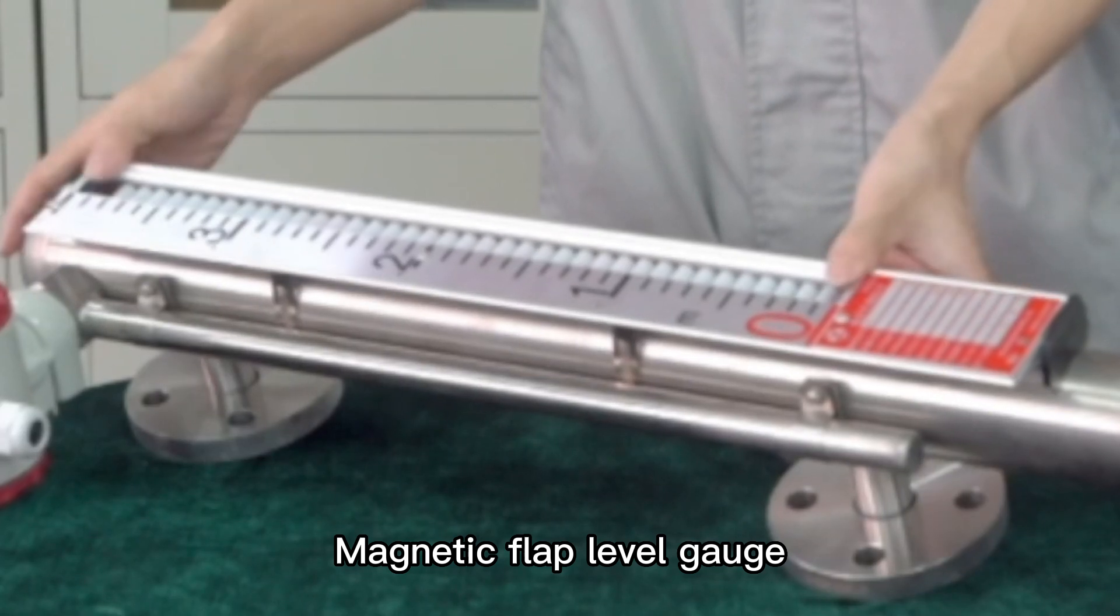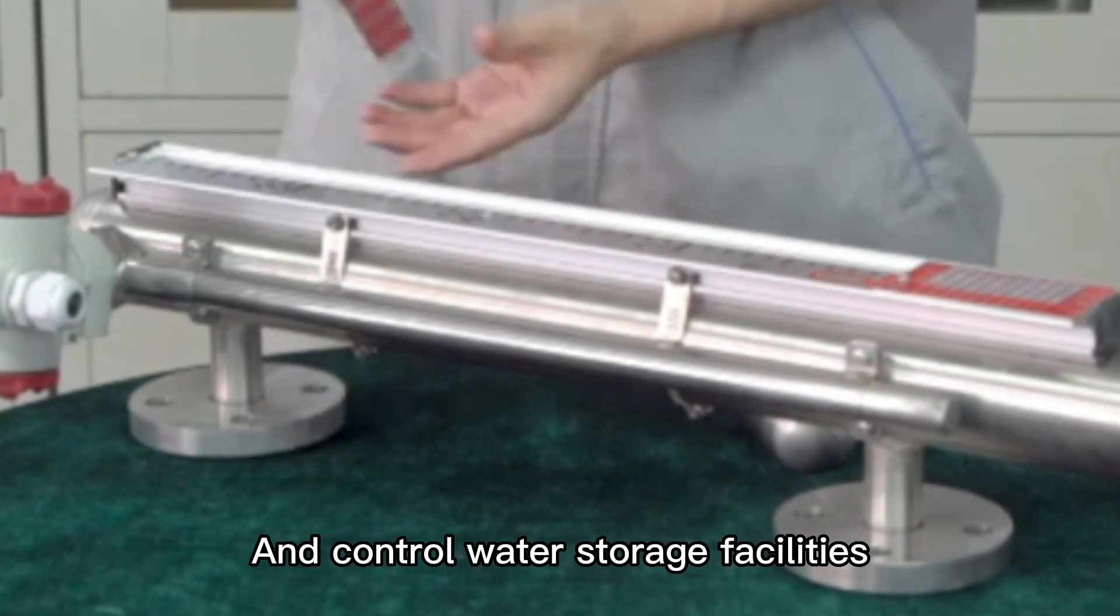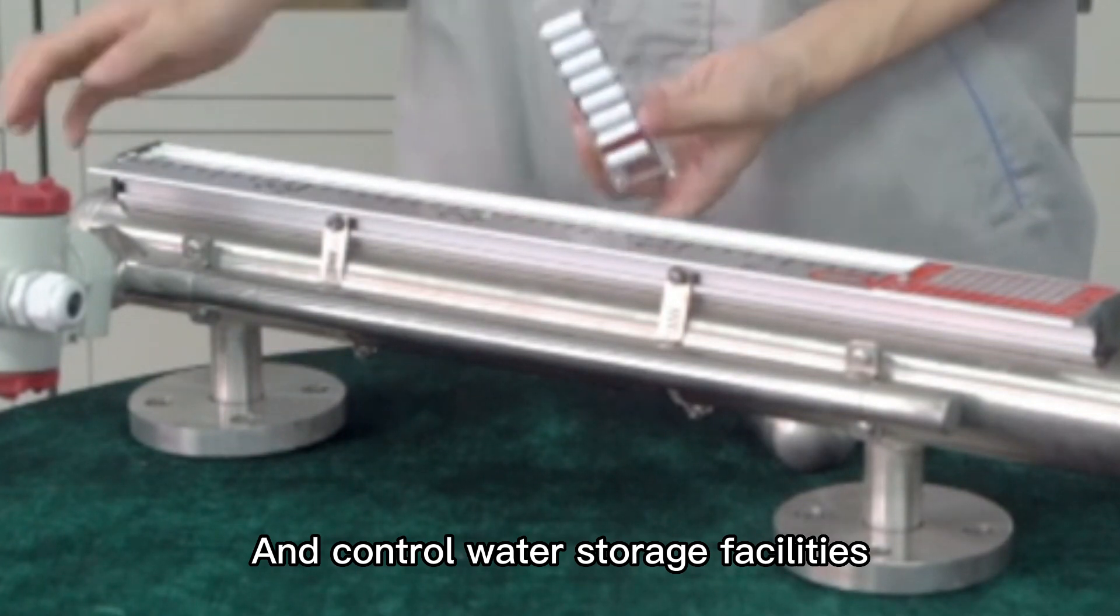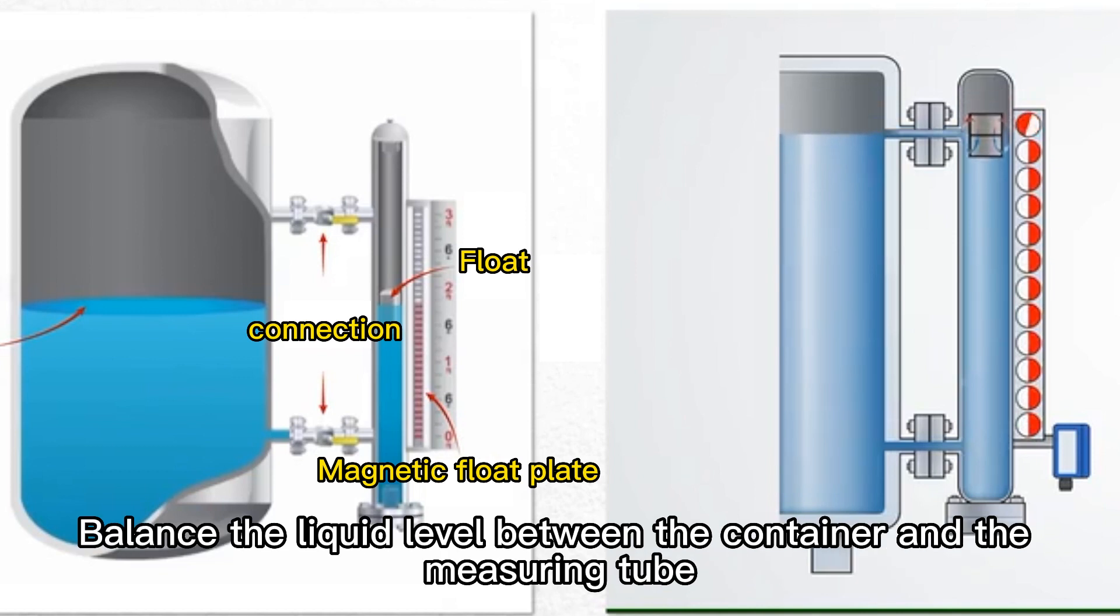Magnetic Flap Level Gauge - its main function is accurate measurement and control of water storage facilities. The magnetic flap liquid level device and the medium vessel are communicated by a communicator, balancing the liquid level between the container and the measuring tube.